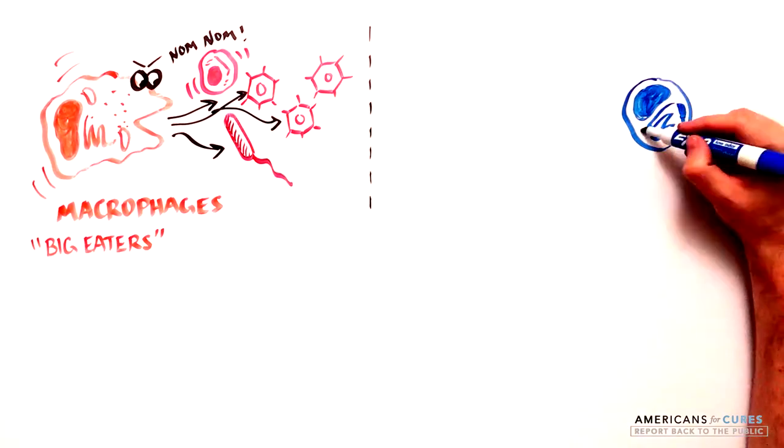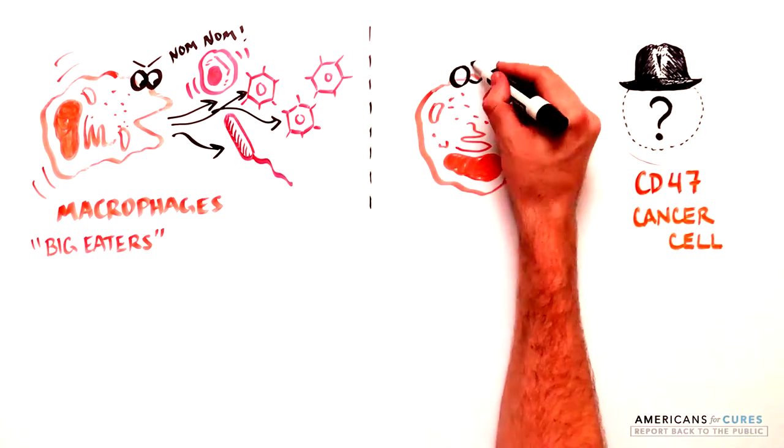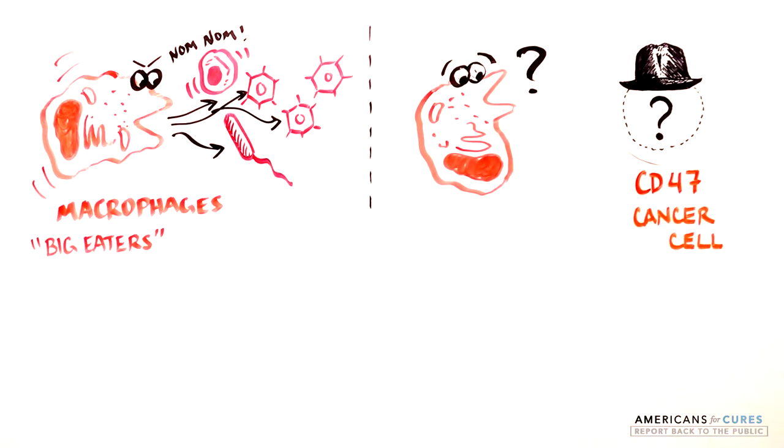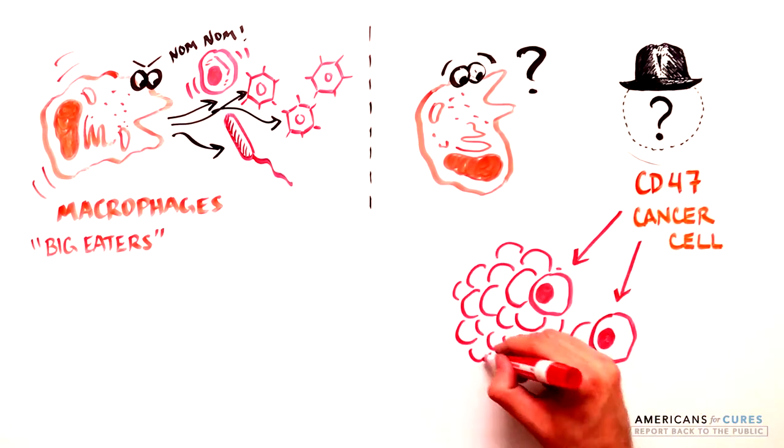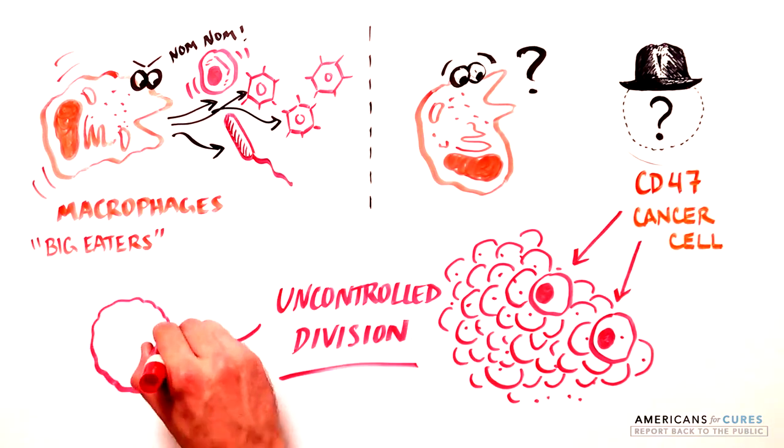However, the invisibility cloak CD47 renders cancer cells invisible to macrophages, allowing the cancer cell to divide unsupervised and eventually form a tumor.